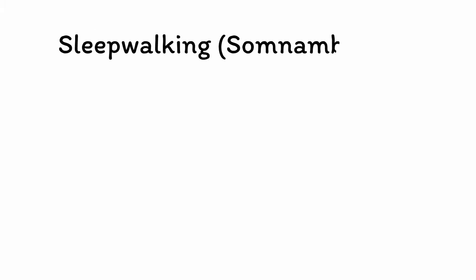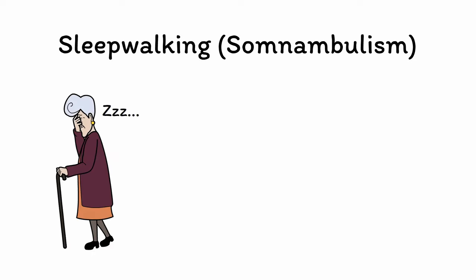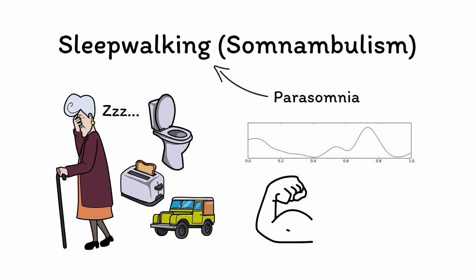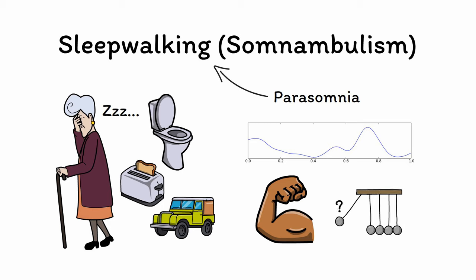Next, sleepwalking, also called somnambulism, is when an individual performs activities as if they are awake despite being in a state of deep sleep. This most commonly involves walking around, although other activities such as going to the bathroom, cooking, and even driving have been reported. Sleepwalking is a type of parasomnia — a category of sleep disorders characterized by abnormal movements or behaviors during sleep. Parasomnias like sleepwalking occur during slow-wave sleep when muscles are not paralyzed like they are during REM sleep. Most cases are idiopathic, though in some cases they may be related to use of Z drugs like zolpidem.